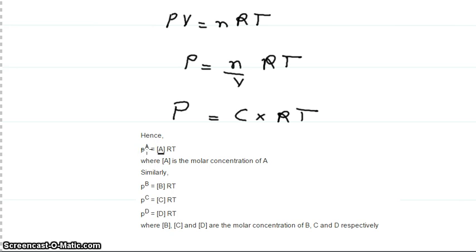Therefore, partial pressure of gas A is equal to A, R, T, where A stands concentration of gas A. In the same way, partial pressure of gas B is B, R, T, where B is concentration of gas B at equilibrium.